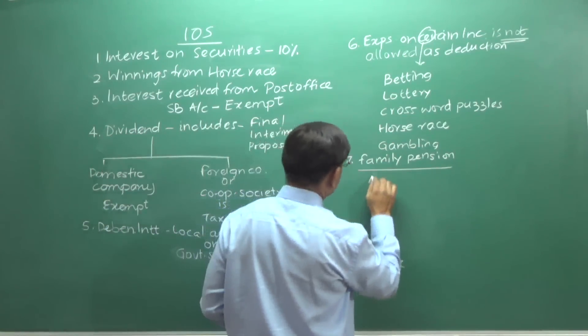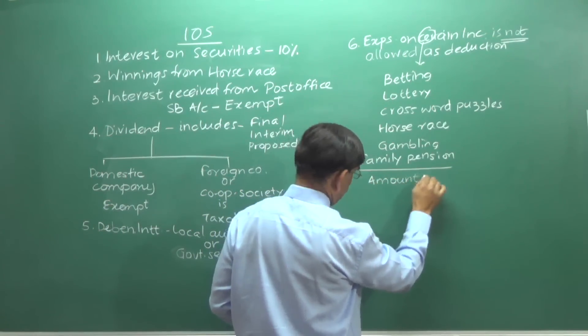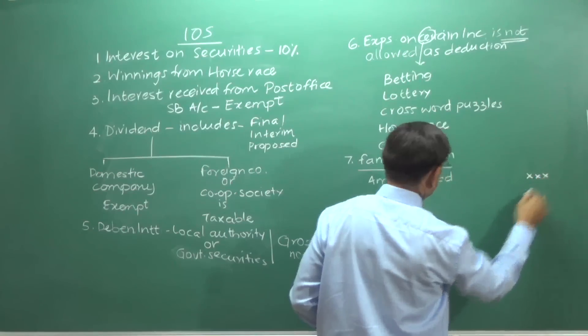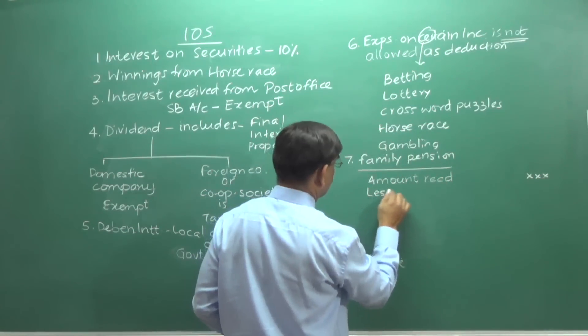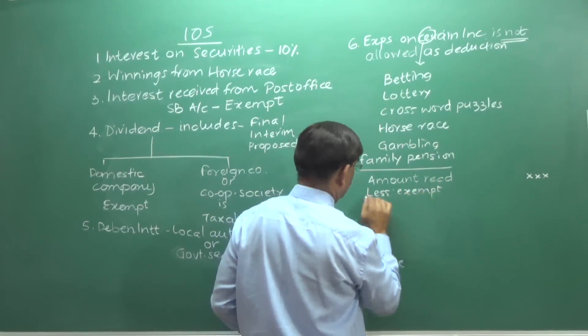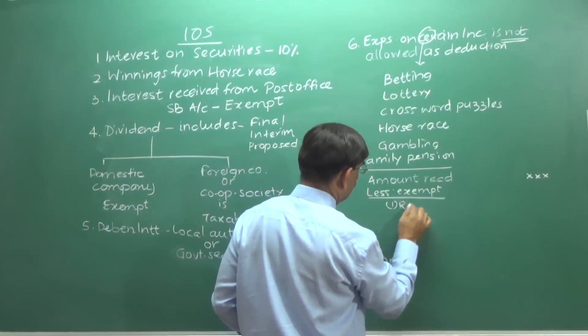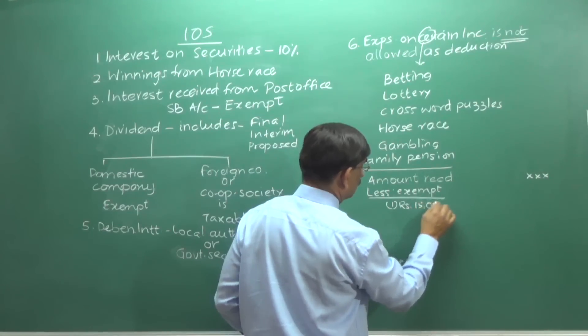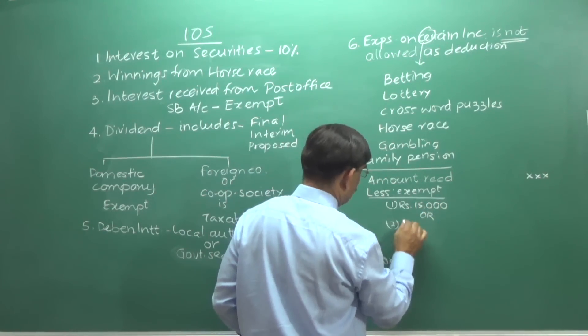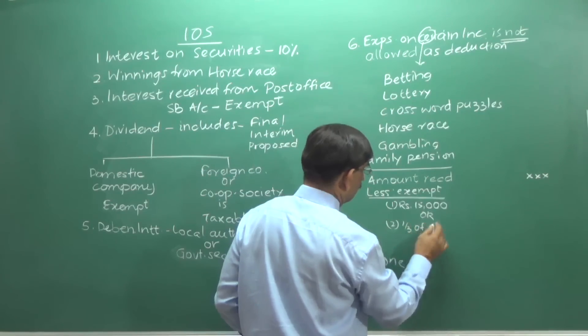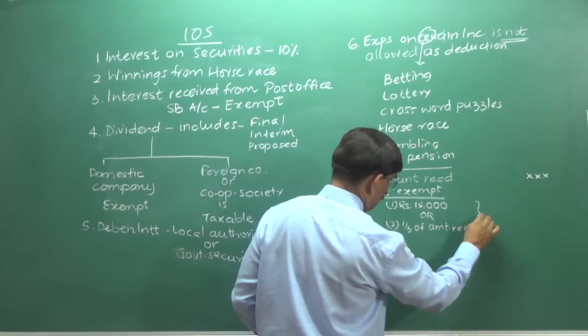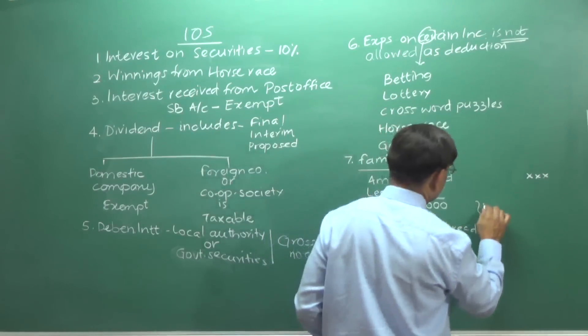The amount actually received less exempt one. Rupees fifteen thousand or one third of amount received